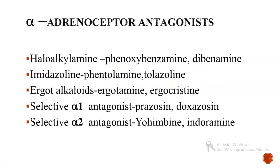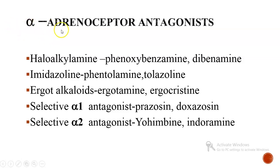Let us study in detail the first category — alpha adrenoceptor antagonists. These are drugs that inhibit the action of sympathetic stimulation only at the alpha receptor in our body. They are further classified into five types: haloalkalamines, imidazolines, ergot alkaloids, selective alpha-1 antagonists, and selective alpha-2 antagonists.